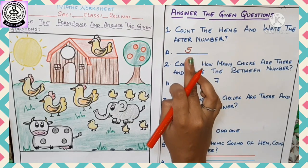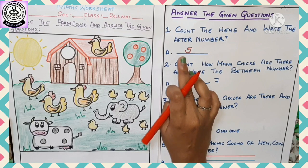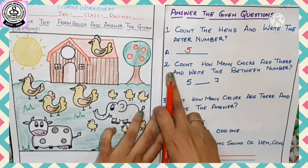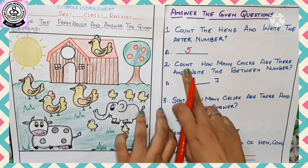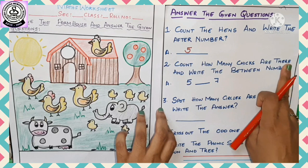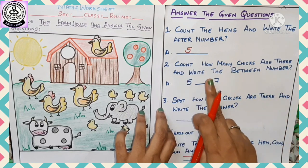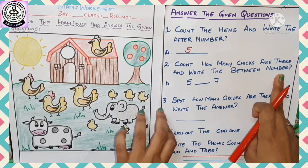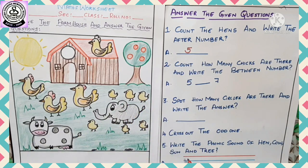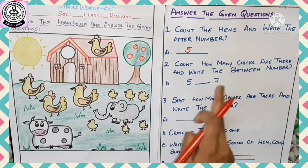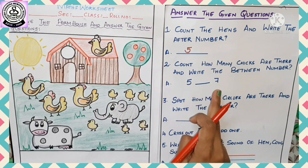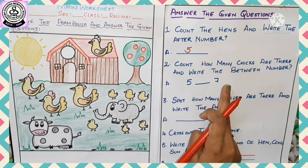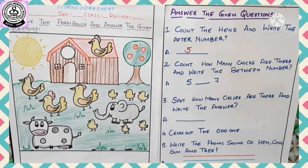Now let's go to our second question: count how many chicks are there and write the between number. Chicks are the babies of hen. We have to write the between number — see here, five dash seven. What will be the between number of five and seven?